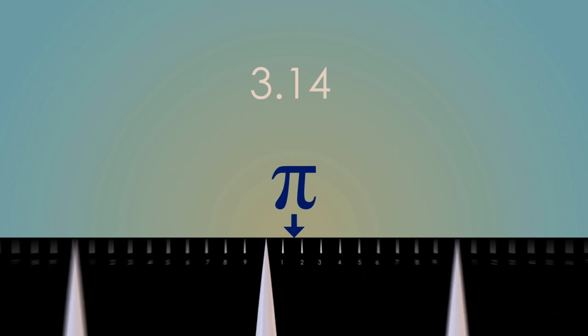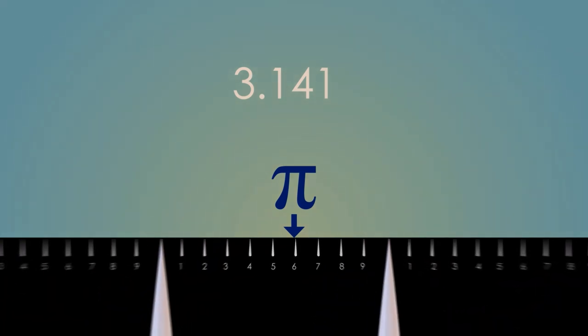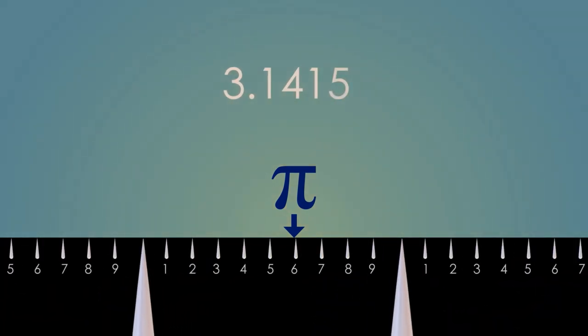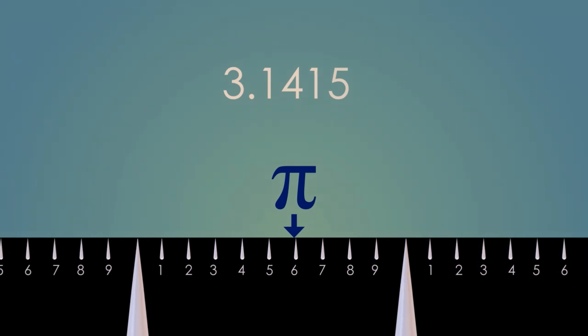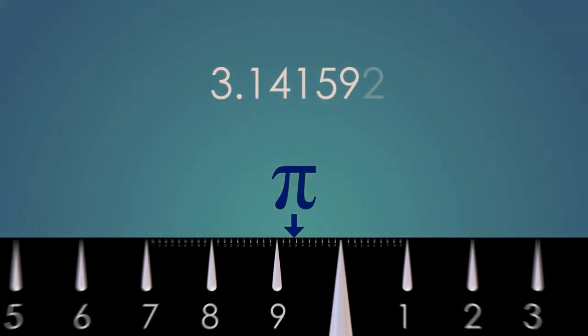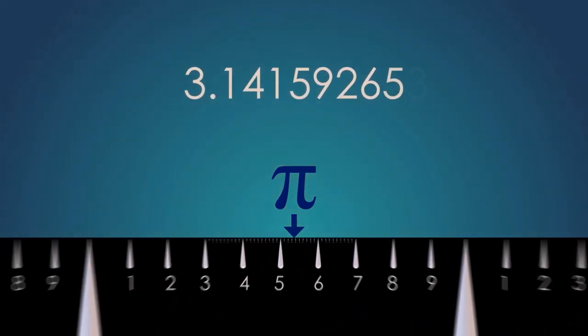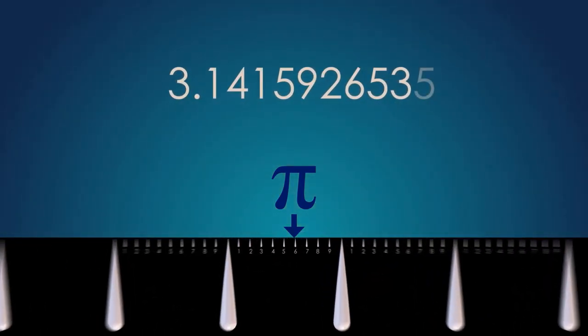So if we zoom in again, we can see that pi is to a greater accuracy about 3.141, but again, that's not exactly right. If we zoom in again, I think you know this is just going to go on forever. We're never going to land exactly on a mark. Pi is this funny kind of number where you'd actually have to talk forever in order to say what it is specifically.